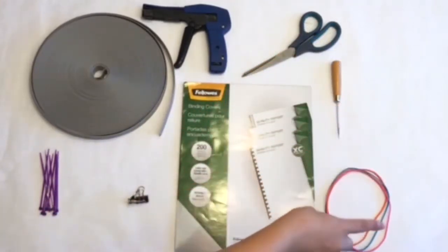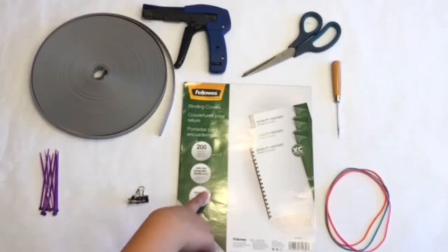We'll also need some rubber bands, clear PVC binding covers which should be letter sized, some clips, and some zip ties which are 4 inches.